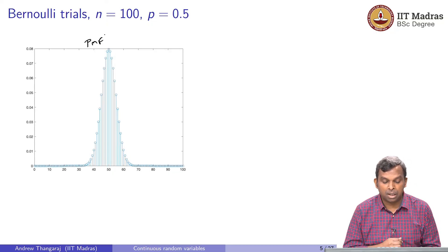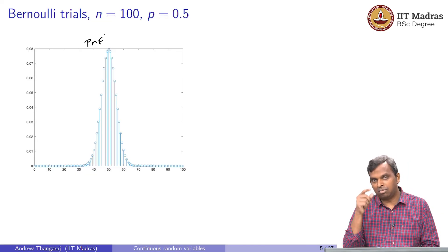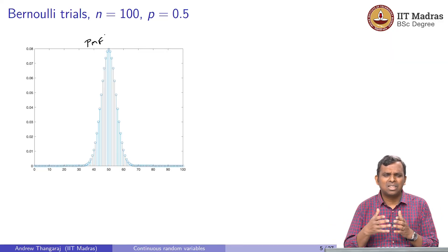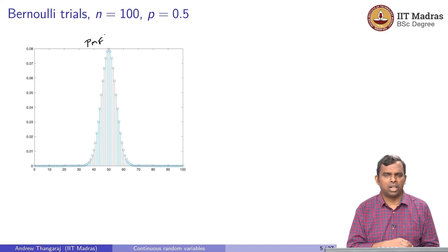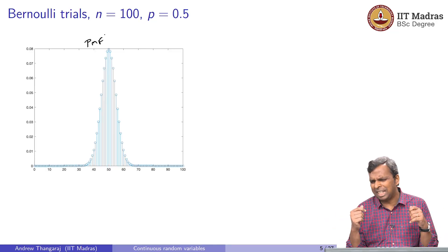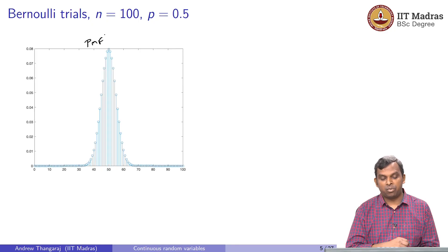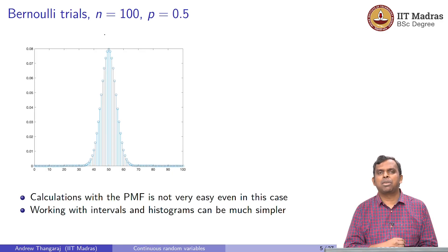For instance, suppose I asked you: what is the probability that the binomial random variable falls between 50 and 60? If you have to do an accurate calculation, you need 100 choose 50 times p^50 times (1-p)^50 plus 100 choose 51 times ... and so on. The calculation is just so unwieldy. I just need to know what is the probability the binomial falls between 50 and 60. Is there an easier calculation? I am willing to give up precision — I do not want the exact answer, just within something is good enough. All of that comes because of continuous random variables, which give you these simpler tools. Calculations with the PMF in the binomial case are very tough, and maybe there are simple alternatives.